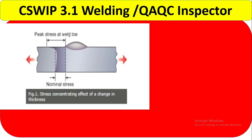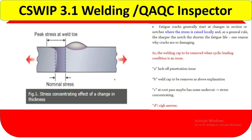Fatigue cracks generally start at a change in section or notches where stress is locally elevated. The sharper the notch, the shorter the fatigue life. If the notch is severe, fatigue life is less — that is one reason why cracks are so damaging. So the weld cap should be removed when cyclic loading condition is an issue. You have to remove the welding cap when thinking about cyclic loading condition.